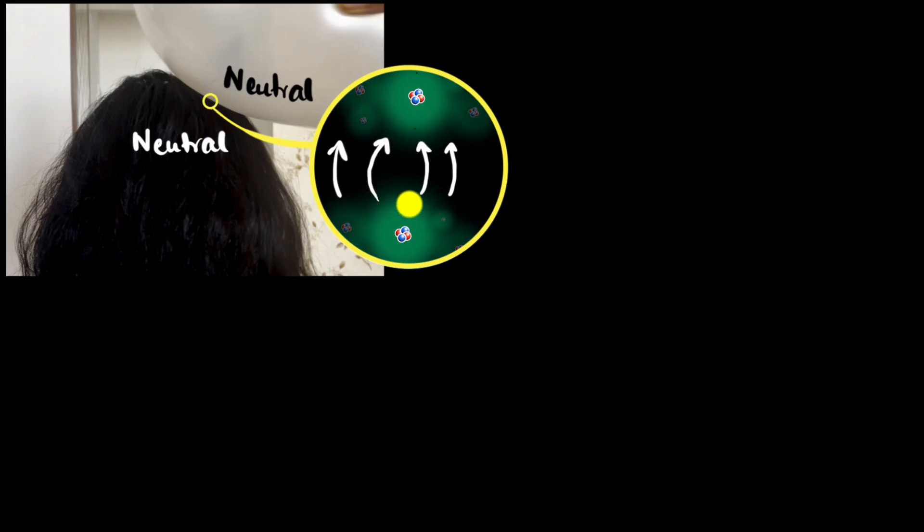Anyways, because of the electron transfer, now look at what has happened. The balloon has gained a lot of electrons now. Therefore, it's no longer neutral. Because it has gained a lot of electrons, it is now having a negative charge. Similarly, the hair is no longer neutral, because it has lost a lot of electrons. It has excess protons now, which means it is positively charged.